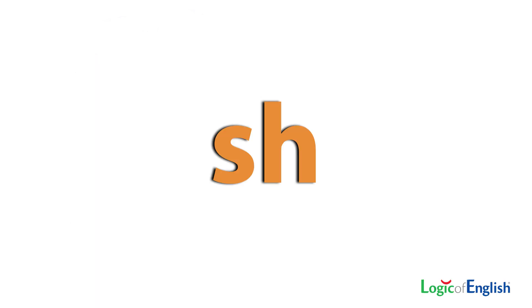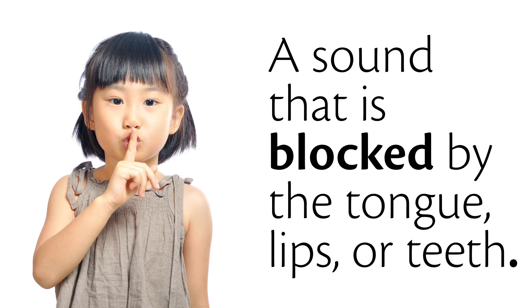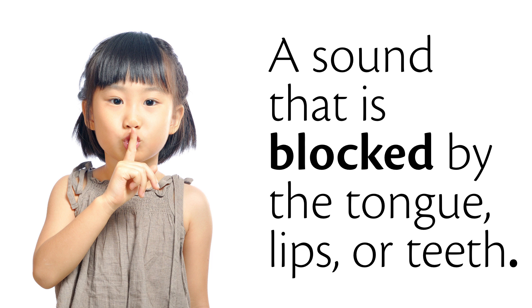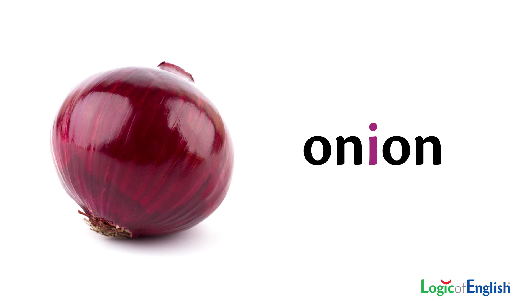How about the sound 'sh' — is it a consonant or a vowel? Consonant. And what's blocking it? Teeth. Can you make it louder and softer? Just a little bit — you could force more air, but not really. So that's a consonant. What about the 'i' in onion — is it a vowel or consonant? It's a consonant; it's a 'y' sound, which is blocked.